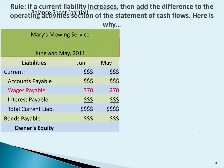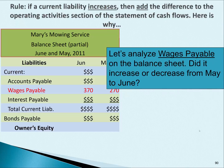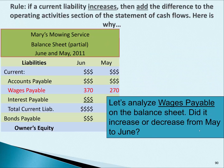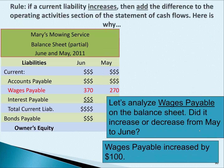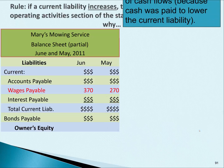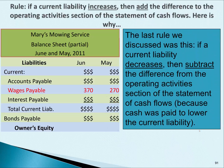We have a partial balance sheet for Mary's Mowing Service, looking at the liabilities. We're going to analyze wages payable. From May to June, wages payable increased by $100. The last rule we discussed was: if a current liability decreases, subtract the difference from the operating activity section, because cash was paid to lower the current liability. When analyzing current liabilities, the arrows are in the same direction.